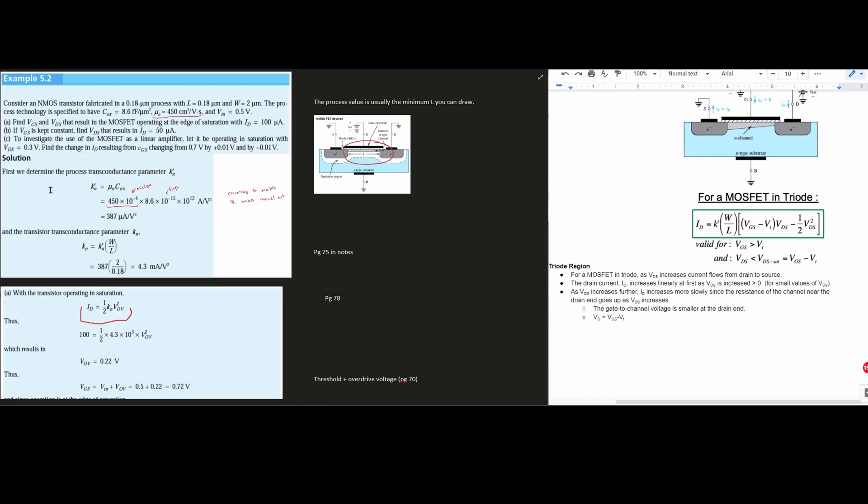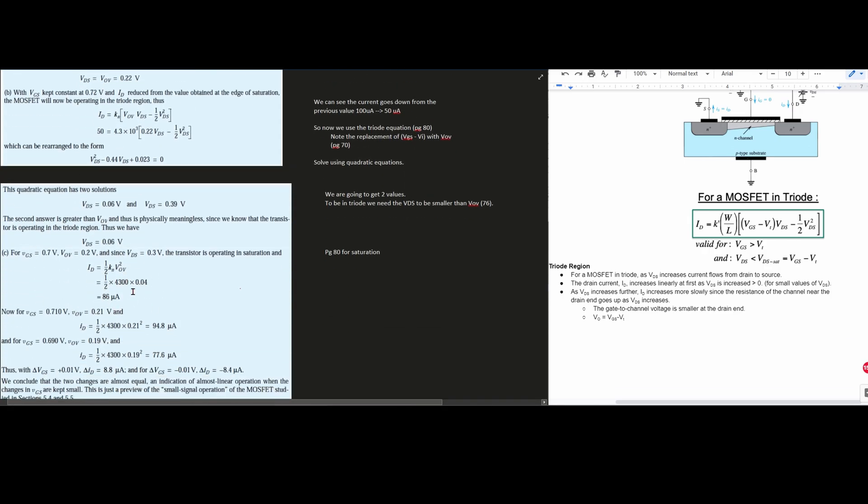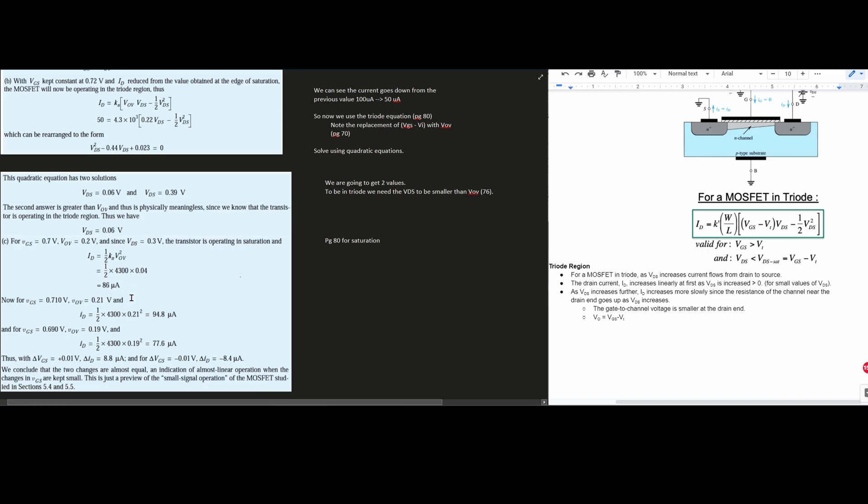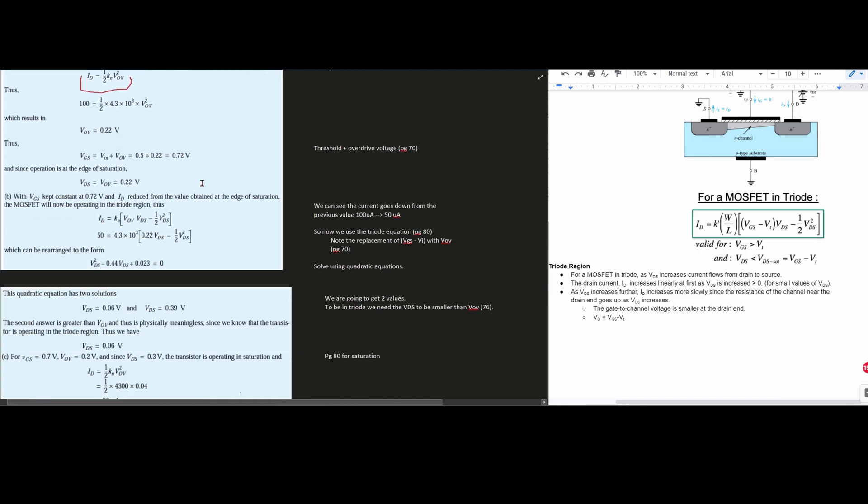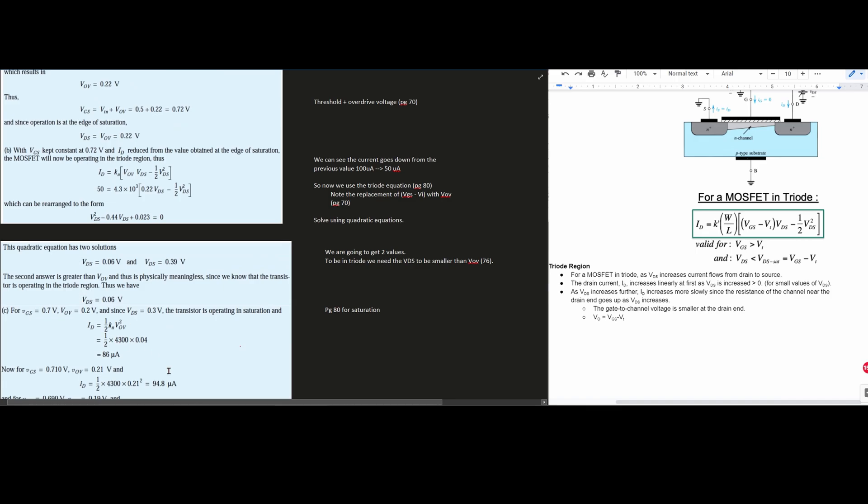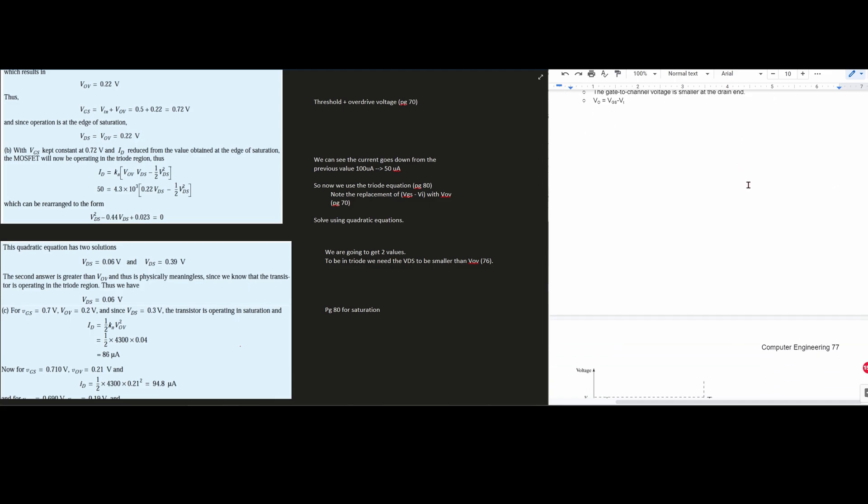In part C, we're told to investigate the use of the MOSFET as a linear amplifier. Let it be operating in saturation with VDS equal to 0.3 volts. Find the change in our ID resulting from the VGS changing from 0.7 volts by plus minus 0.01 volts. So for this one, we'll come down to our C and we have a lot that we need to do, but not too much that's different from what we need to do initially. So for VGS, it's equal to 0.7 volts. We were told this up here changing by 0.7 volts. So coming down to here, VOV is equal to 0.2 volts. Since VDS is equal to 0.3 volts, the transistor is operating in saturation. So let's go for saturation.